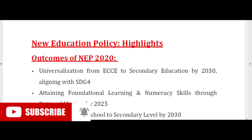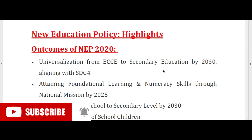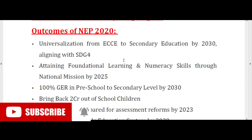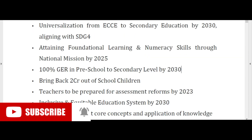Key highlights and outcomes of NEP 2020: Universalization of Early Childhood Care and Education (ECCE) to secondary education by 2030, aligning with SDG4. Attaining foundational learning and numeracy skills through a national mission by 2025. Achieving 100% Gross Enrollment Ratio from pre-school to secondary level by 2030, and bringing back 2 crore out-of-school children.